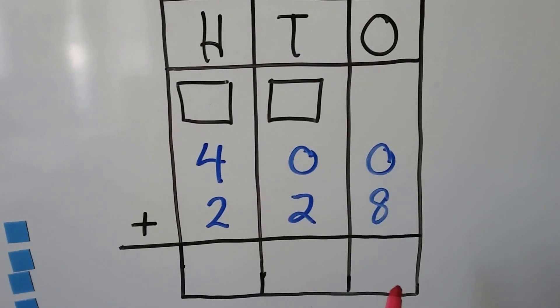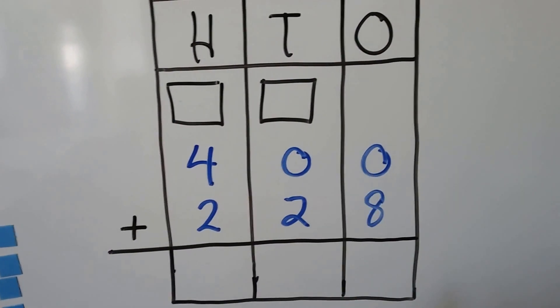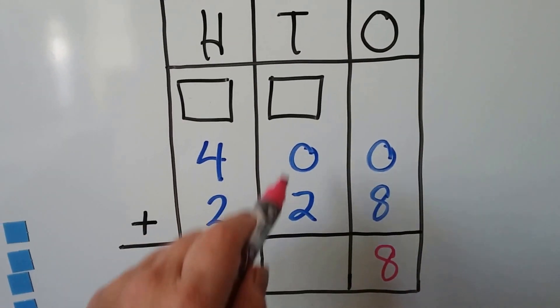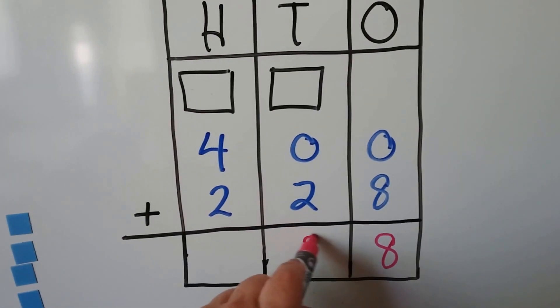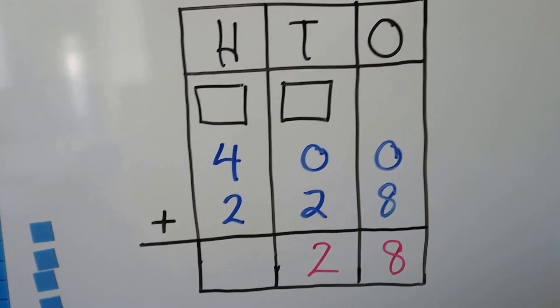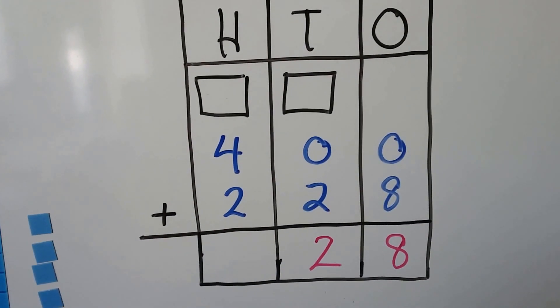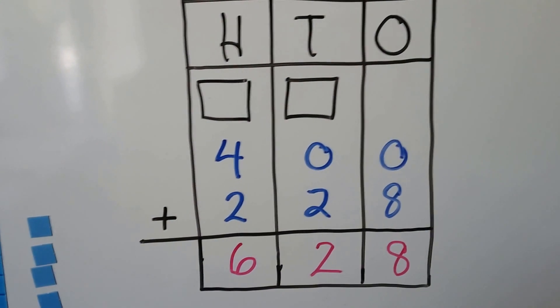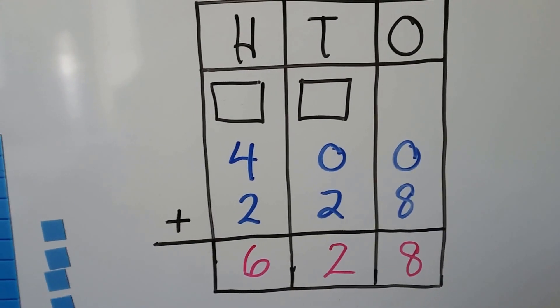We start by adding the ones place. We have eight plus zero. Well, that's easy. That's eight, isn't it? We have two and a zero. That's easy. That's a two. And now we add four and two. And that's easy. That's a six, isn't it? So we didn't have to regroup on this one. Sometimes we don't have to. We have 628.